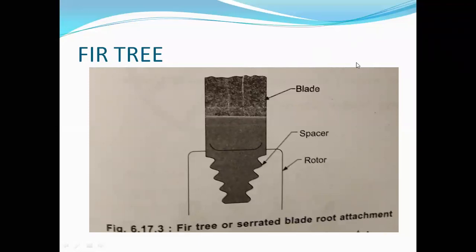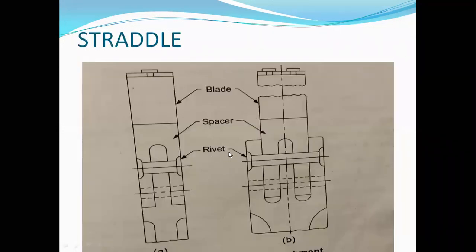That was the full description of the fur tree and serrated blade root attachment. Next, we discuss the straddle attachment, which may be in single or multiple form. The figure shows the straddle attachment for moderate speed and short blades.